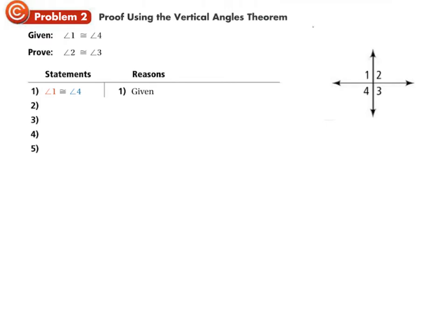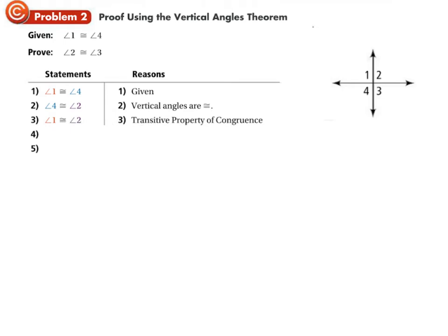The given information is the first line. In a two-column proof, statement one has a matching reason. Going to step two: angle four is congruent to angle two — they are vertical angles, so the reason is the Vertical Angles Theorem. Now, both angle one and angle two are congruent to angle four, so by the transitive property of congruence, angle one is congruent to angle two.